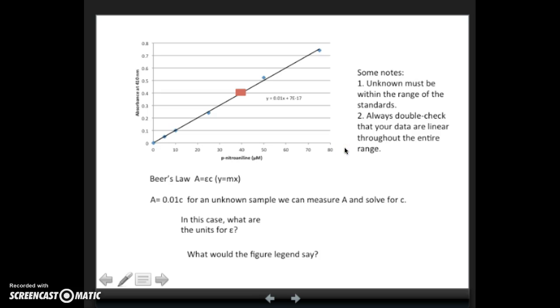A couple of other things we just want to note. The first is that the unknown must be within the range of the standards. You don't want the unknown out here somewhere. We really only know the relationship holds true over this range, so we always want our unknowns to be on our standard curve. The other thing is to always double check that your data are linear throughout the entire range. You don't want to use a linear regression line if the data isn't linear over the whole range.